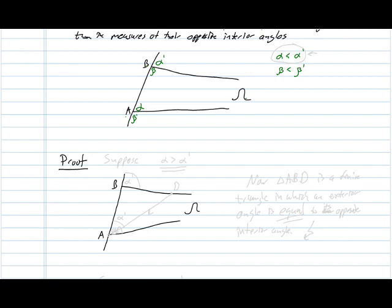So we're going to prove this inequality here by contradiction. We're going to first assume that alpha is greater than alpha prime and we're going to show that that results in a contradiction. And then later, we're going to suppose that alpha equals alpha prime and show that that results in a different contradiction.